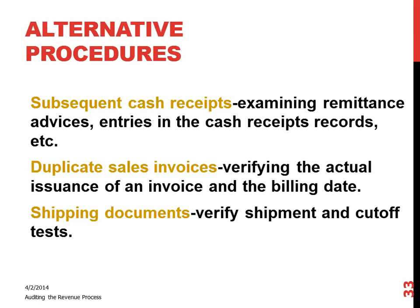Another way — and probably more accurate than duplicate sales invoices — is shipping documents. All that really tells you, though, is that it's a valid accounts receivable. If I shipped it, I did process a sale for this customer, and so there's a corresponding receivable. The most used alternative procedure would be first to look at subsequent cash collections, and then if there's not been a cash receipt associated with that receivable, to look at either shipping documents or duplicate sales invoices.